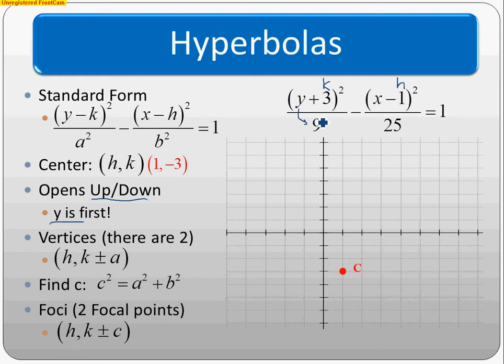A² is still the first number - this was different for ellipses, so keep it straight. A²=9, so A=3. B²=25, so B=5. Up and down 3, left and right 5.